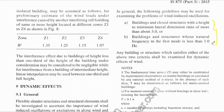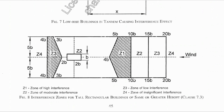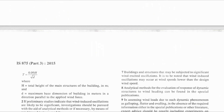IS code also gives us the formula for calculating the time period. For moment resisting frames without bracings or shear walls, the time period is equal to 0.1N, where N is the number of stories. For all other structures, the time period is equal to 0.09 times the height of the structure divided by the square root of the maximum base dimension.